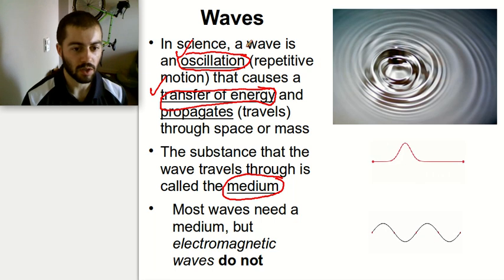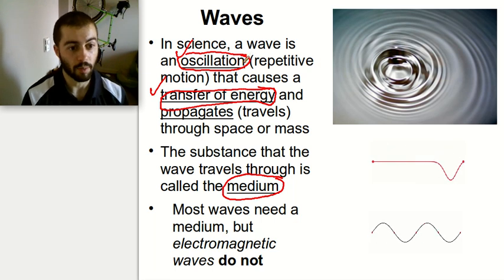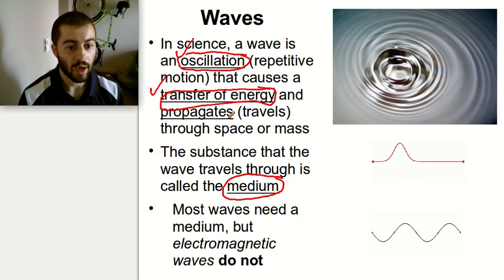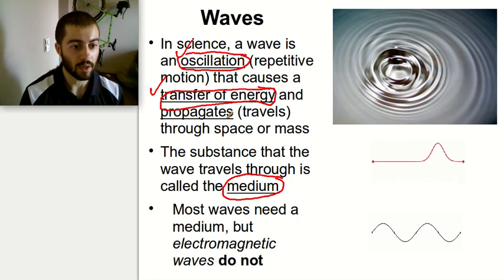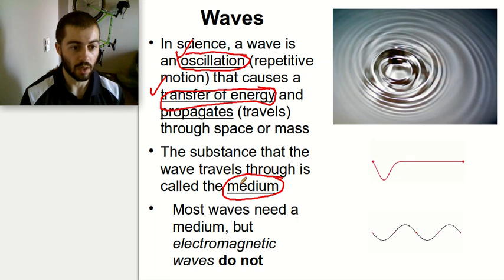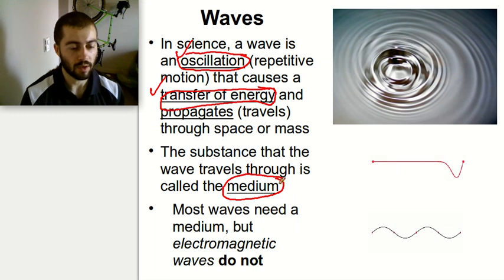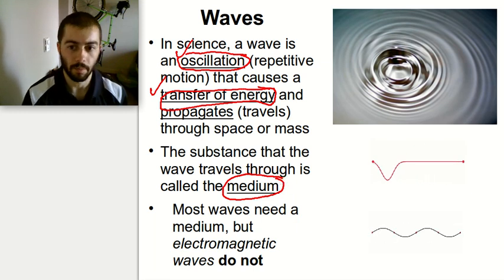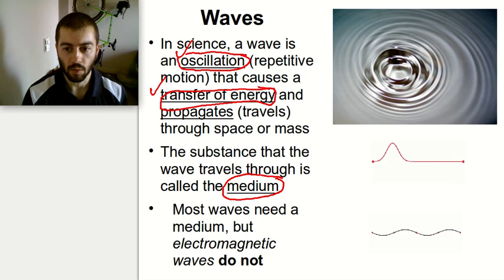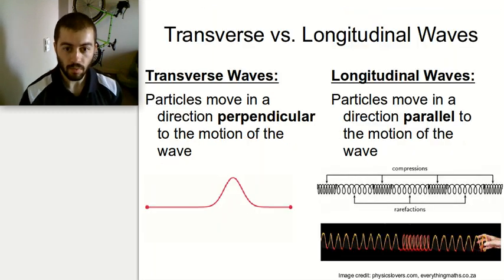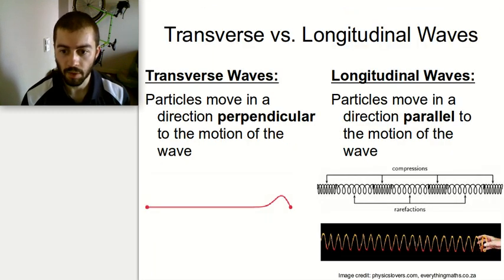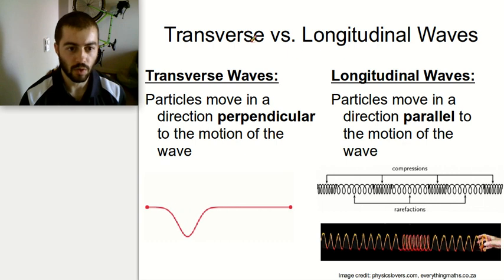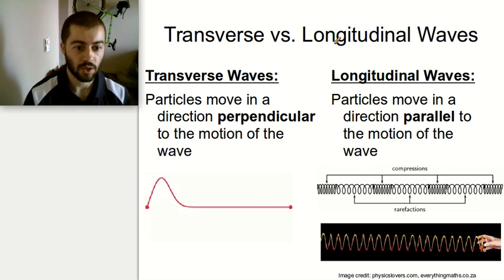So the important parts with waves: they're an oscillation or repetitive motion, they involve a transfer of energy, and they propagate or travel through the space or medium that they're traveling through — whatever the stuff is that the wave is traveling through, that's called the medium. Now, there are a couple of different types of waves: transverse waves and longitudinal waves.